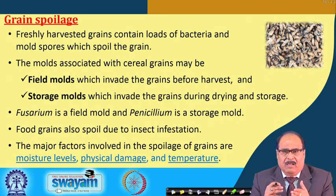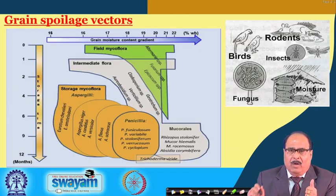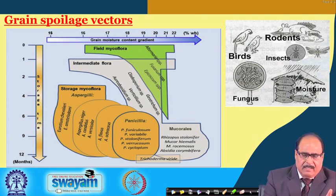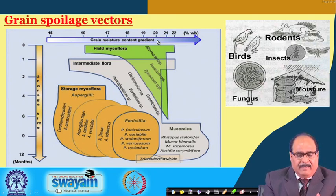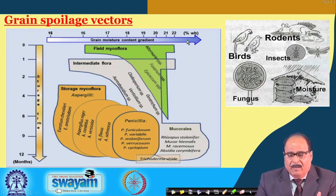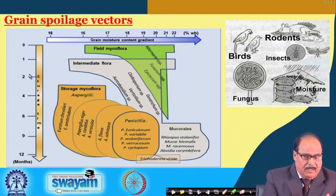These attributes are quite often used to detect or identify the spoilage level in the grain. The grain spoilage vectors are rodents, birds, insects, fungi, moisture, and temperature. In this picture you can see storage months on the y-axis from 0 to 12 months, and the x-axis shows grain moisture content ranging from 15 to 22 percent. When there is high moisture content at the time of harvest, field microflora such as Fusarium are active.